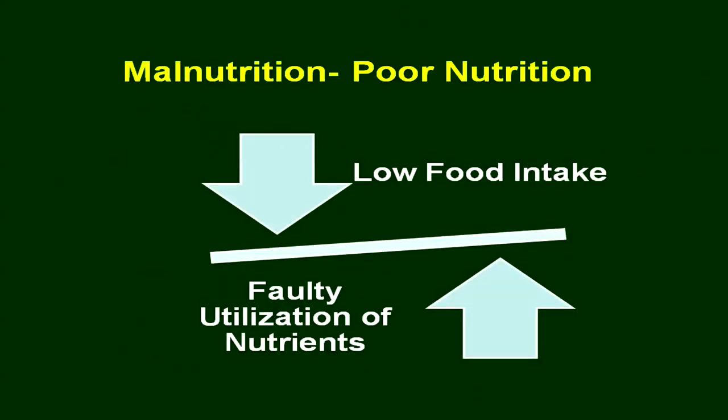But when these things are deviating, then what happens? It is poor nutrition, and we also use the term malnutrition, though it is a very wide term. Globally, malnutrition is so much prevalent in India and in other countries also. And why does it happen? Low food intake and faulty utilization of nutrients — so there is a disbalance.